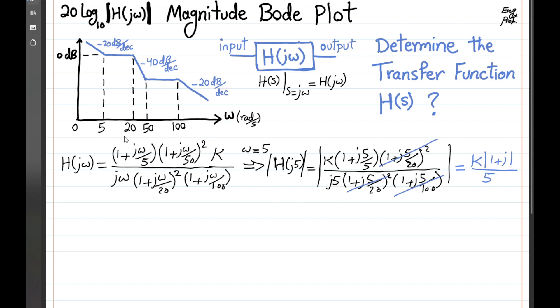So since at omega equal to 5, the magnitude in dB is 0 dB, it means the linear value of magnitude is 1. So it means magnitude of h of j5 is equal to 1, and that means 1 is equal to k times absolute value of 1 plus j, divided by 5,